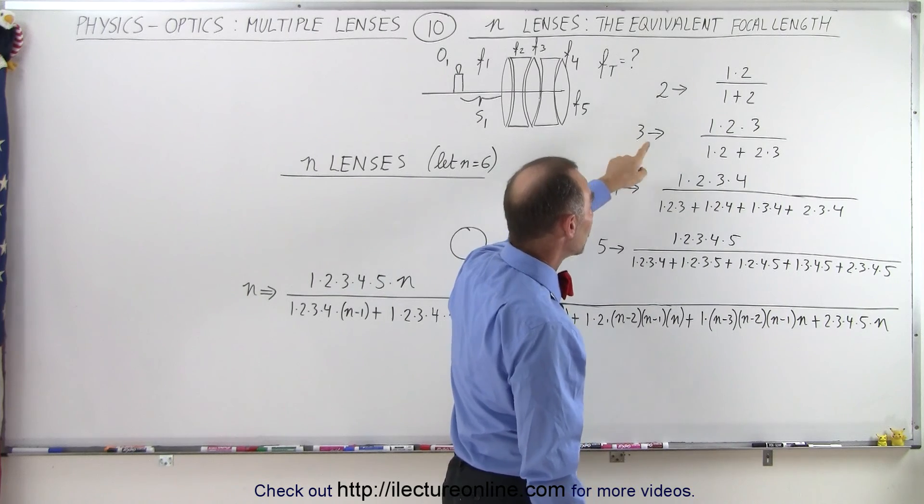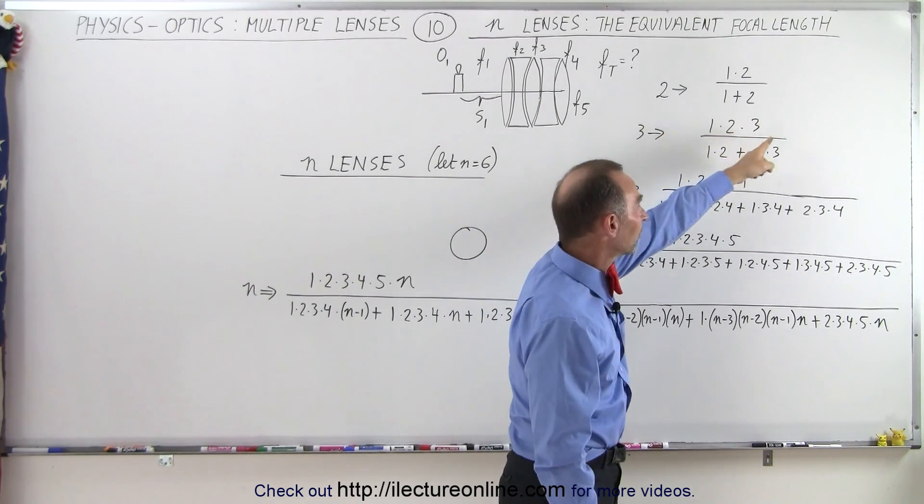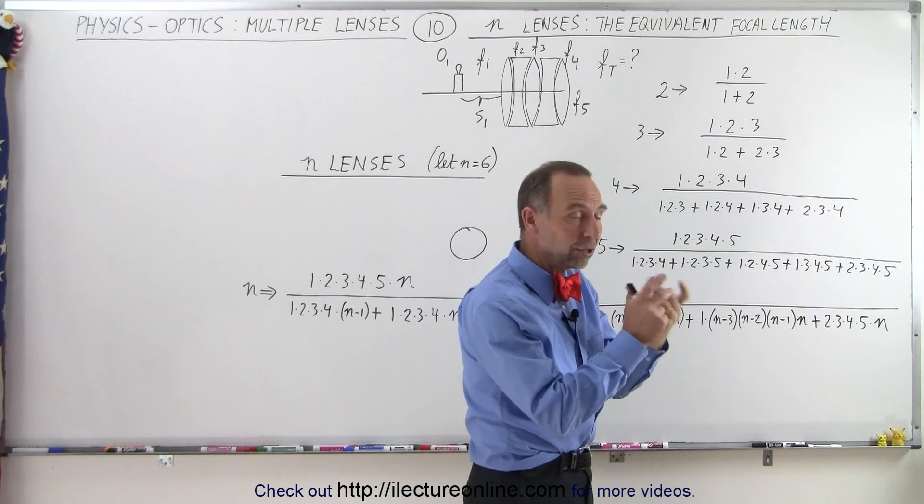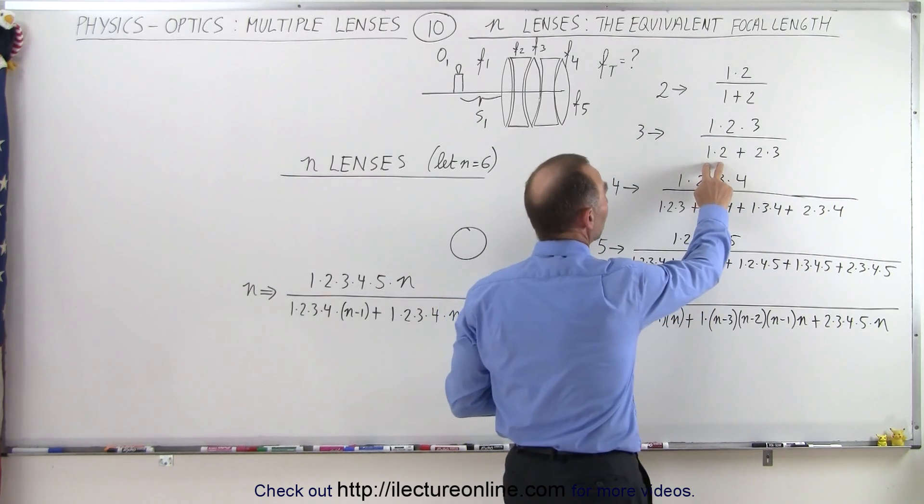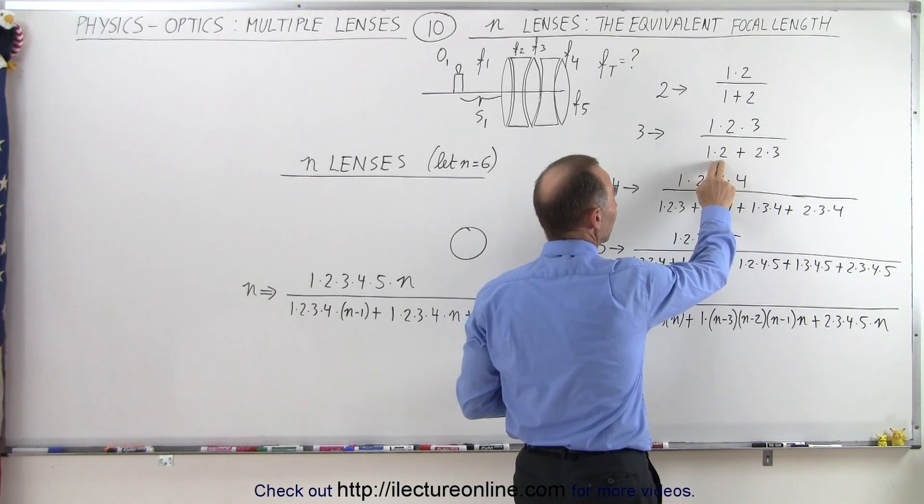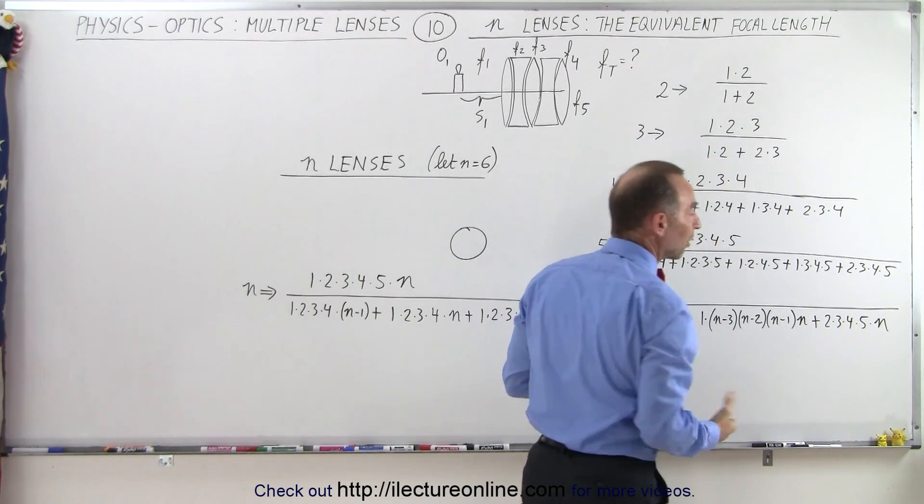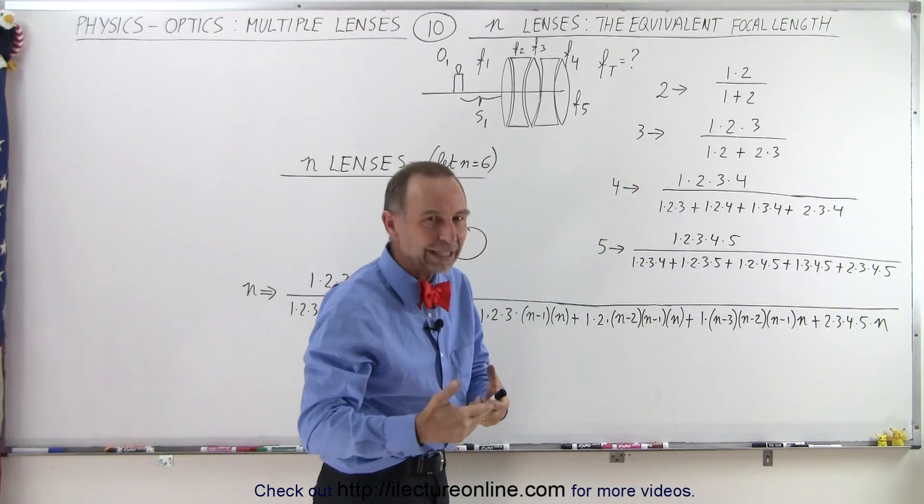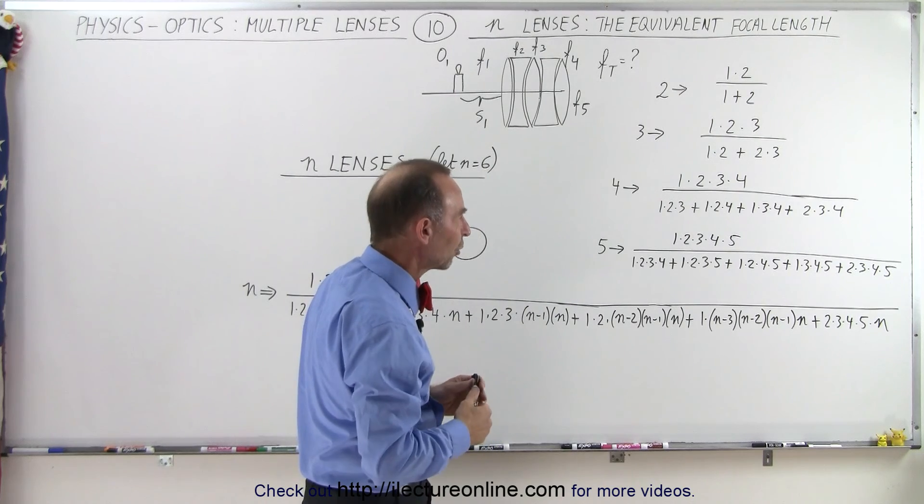With three lenses, you multiply all the focal lengths together of the three lenses and then you start combining them two at a time. The focal length of the first times the focal length of the second plus the focal length of the second times the focal length of the third and so forth. Notice that I left off the character F indicating the focal length.